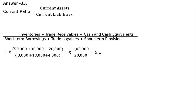The amounts are: rupees 50,000 plus rupees 30,000 plus rupees 20,000, divided by rupees 3,000 plus rupees 13,000 plus rupees 4,000, which equals rupees 1 lakh upon rupees 20,000, that is equal to 5:1. This is the current ratio.